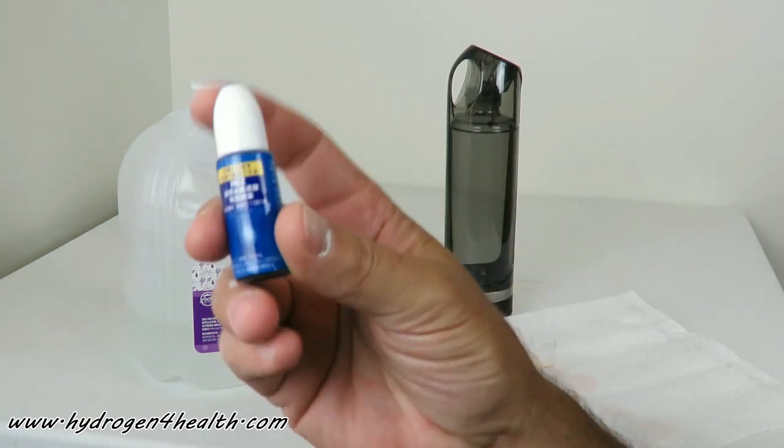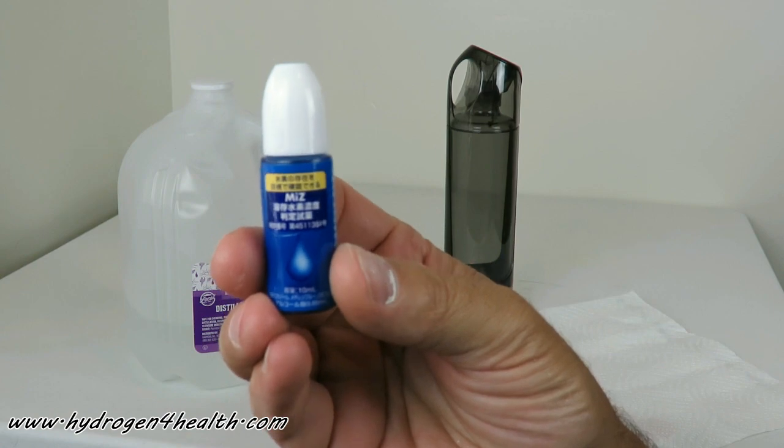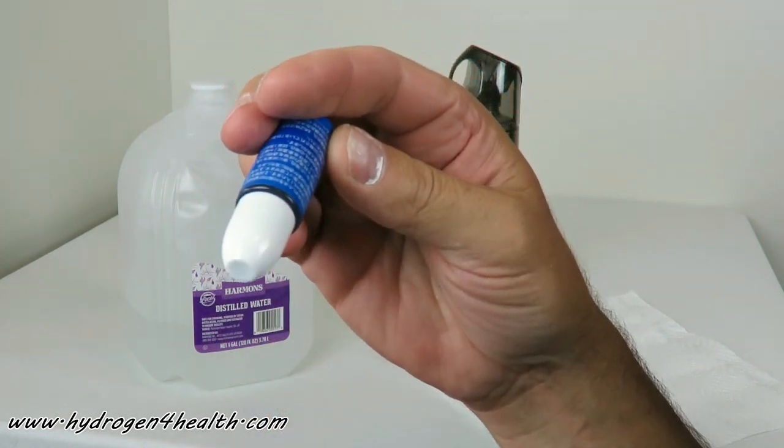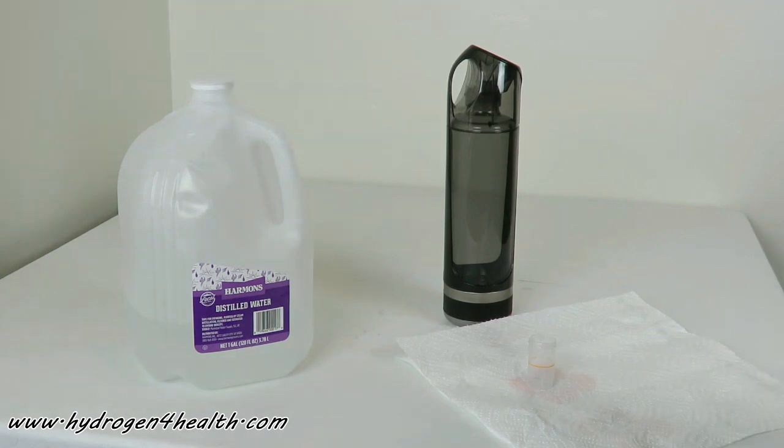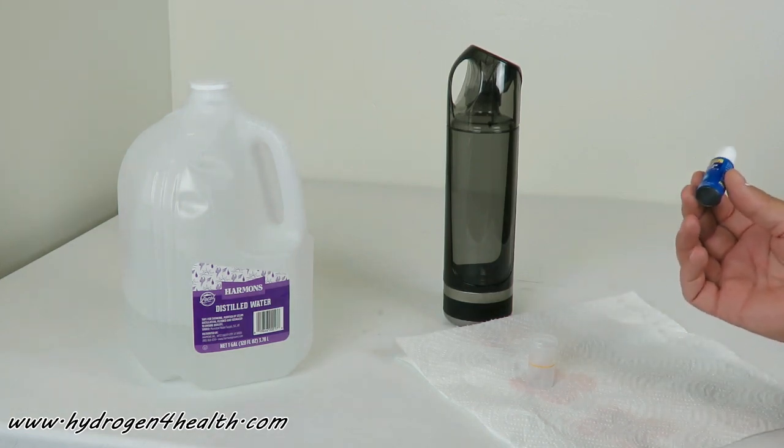As we put a drop into the water, if it turns clear, that means there's at least 0.1 ppm of hydrogen content in the water, and for every drop it's 0.1.